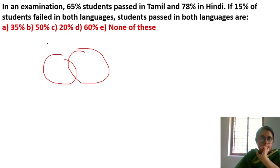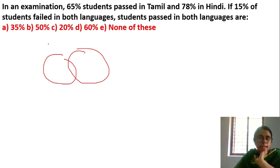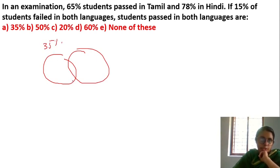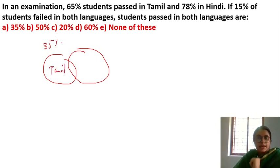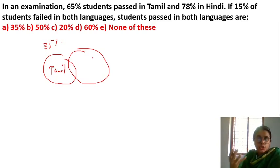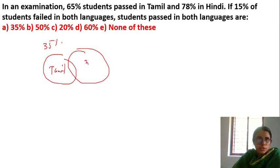60% of the people have passed in Tamil, so 40% failed in Tamil. 78% passed in Hindi, meaning 22% failed in Hindi. Now 22% failed in Hindi.